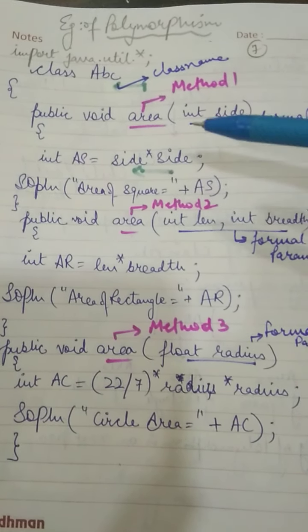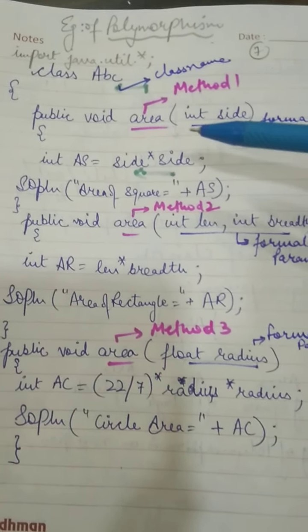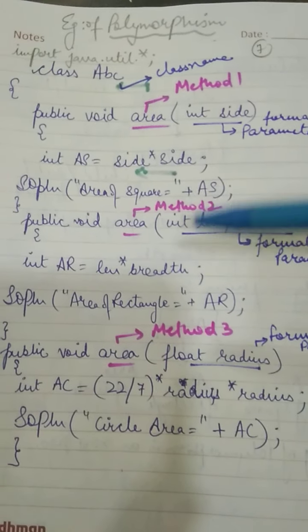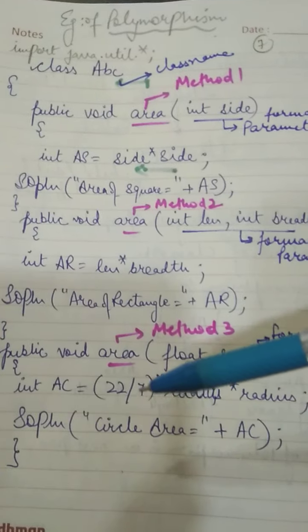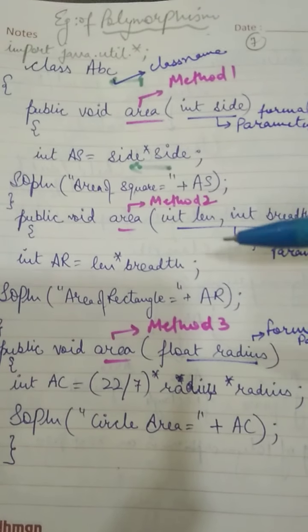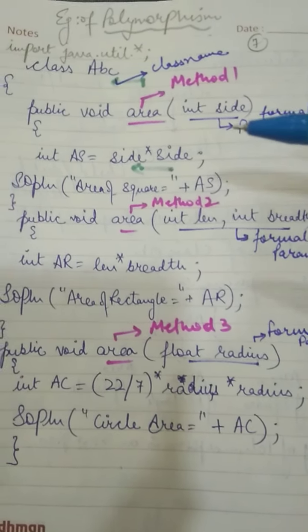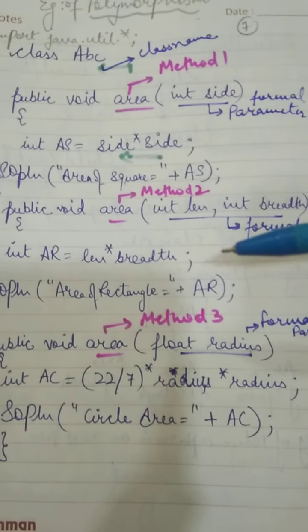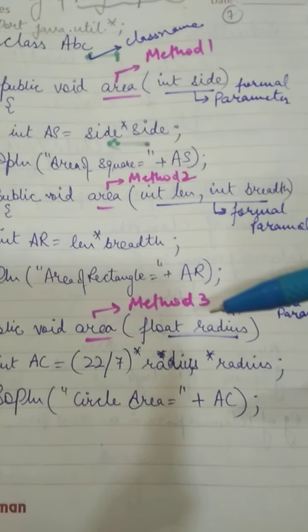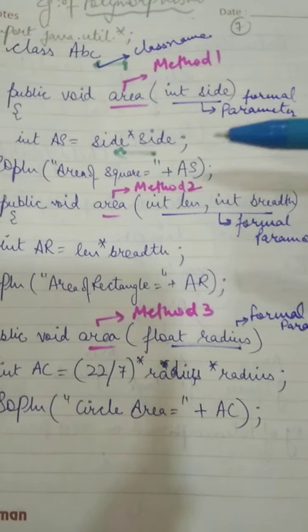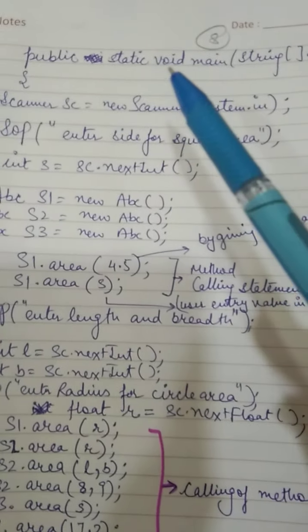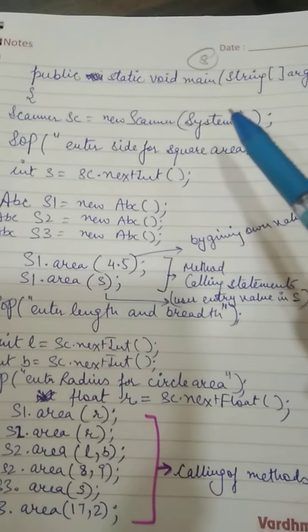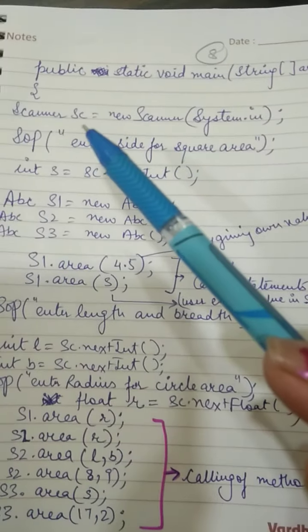In this program we have three methods and all the method names are area. This is polymorphism — we can use the same method name but with different parameters. Using different parameters, the compiler knows which area method is being called. Now I will show you the main method.